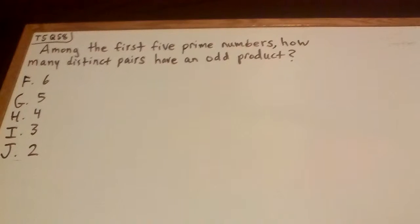Right, hey there, how's it going? Here we have another question, let's take a look. It says among the first five prime numbers, how many distinct pairs have an odd product? Now here we have no figure to look at—there's no drawing, this isn't a geometry question—so we should focus a lot on the sentence here, on this question.